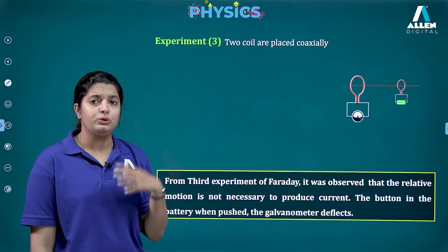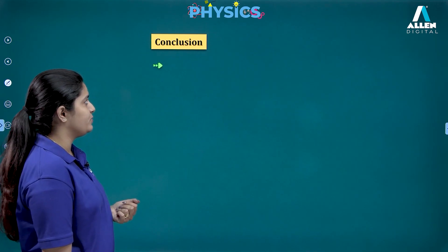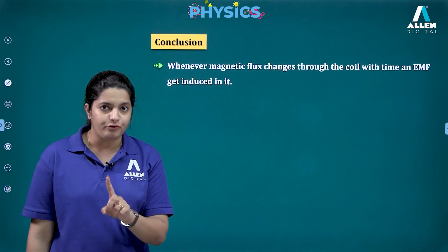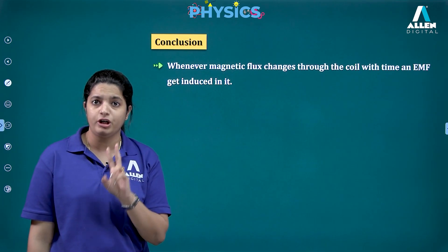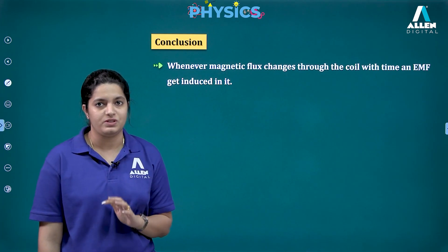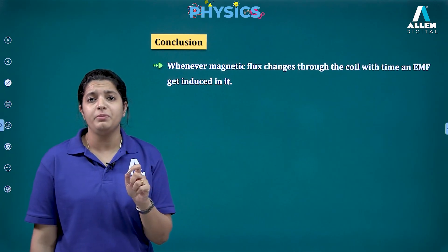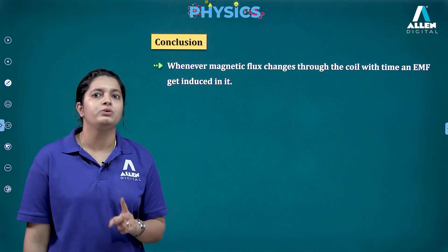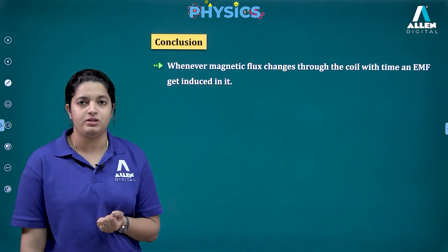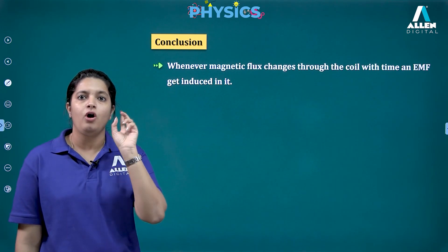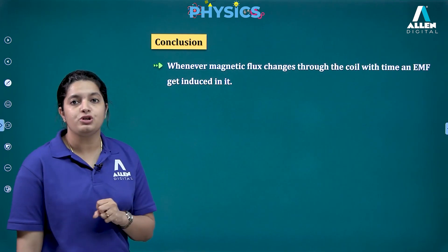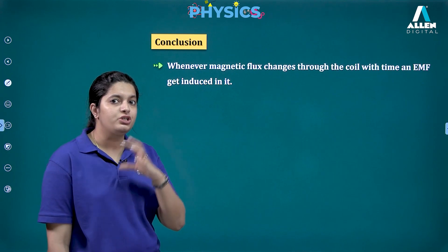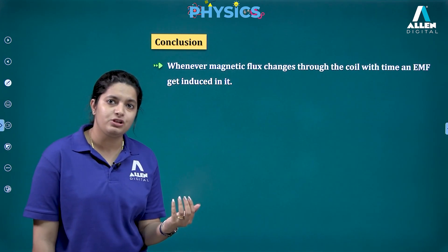The conclusion from all three sets of experiments was that whenever magnetic flux changes through a coil with respect to time, an induced EMF is produced in it. If the coil is a conducting closed circuit, there will also be an induced current. EMF will always be induced regardless of material, but current will only flow if the material is a closed loop made of conducting wire.